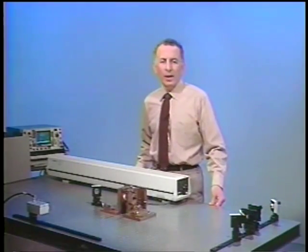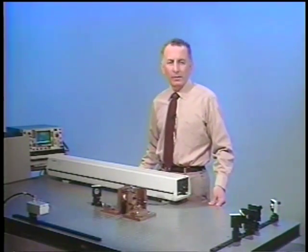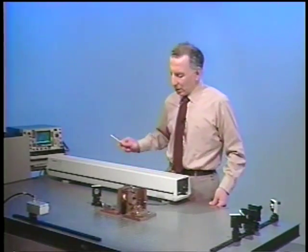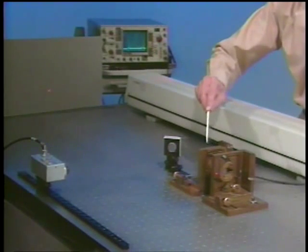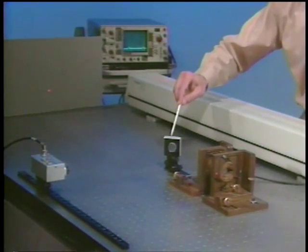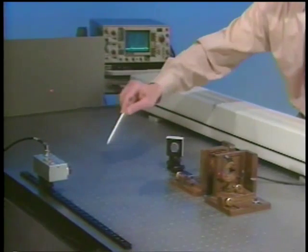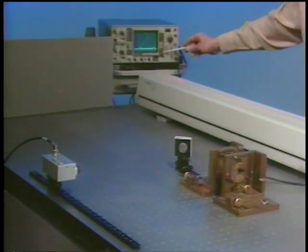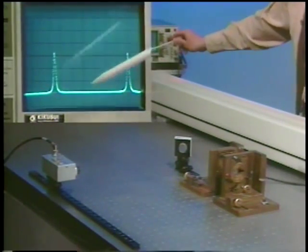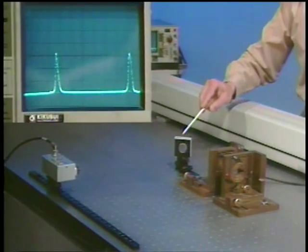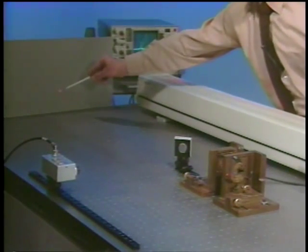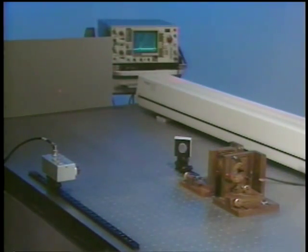I have now added the detector so that we can look at the output of the cavity both on the detector as well as directly on the screen. The output of the beam is reflected by the beam splitter here onto the detector. And the output of the detector then goes onto an oscilloscope. Also, since this is a beam splitter, the direct output of the cavity can still be monitored on the screen.